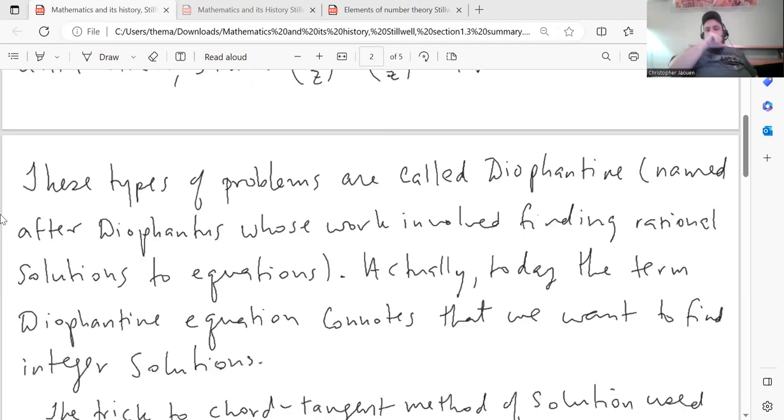These types of problems are called Diophantine, named after Diophantus, whose work involved finding rational solutions to equations. Actually, today, in number theory, Diophantine equations don't really refer to equations with rational solutions. It refers to finding solutions of equations, specifically integer solutions rather than rational ones.